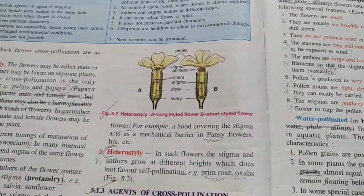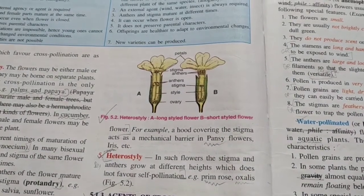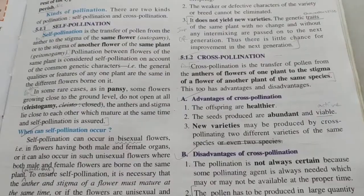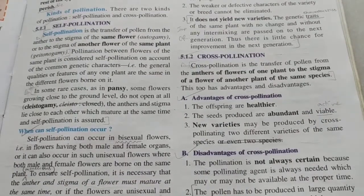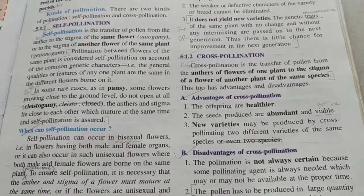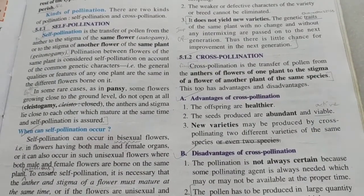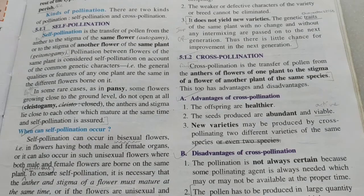Nature favors cross-pollination because the offsprings are always healthier. When DNA from two different parents combines, the genetic variation leads to healthier offsprings.